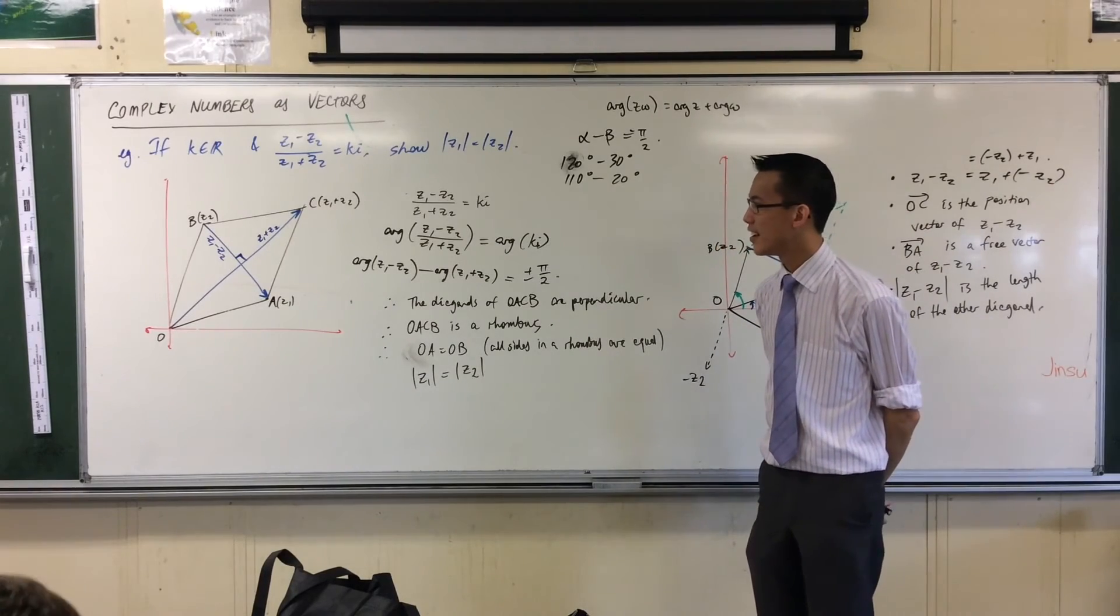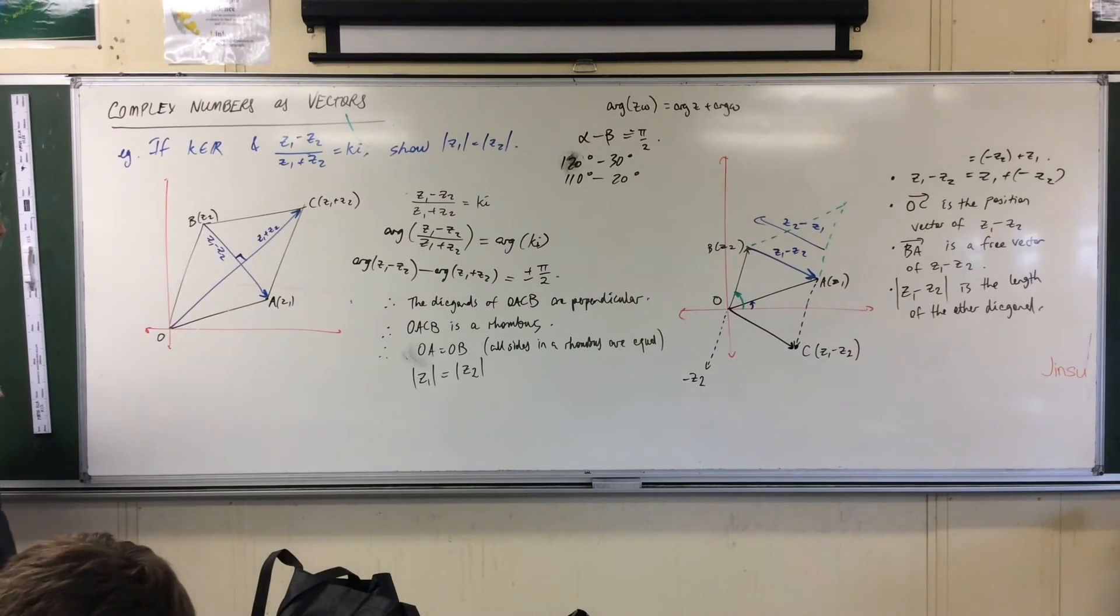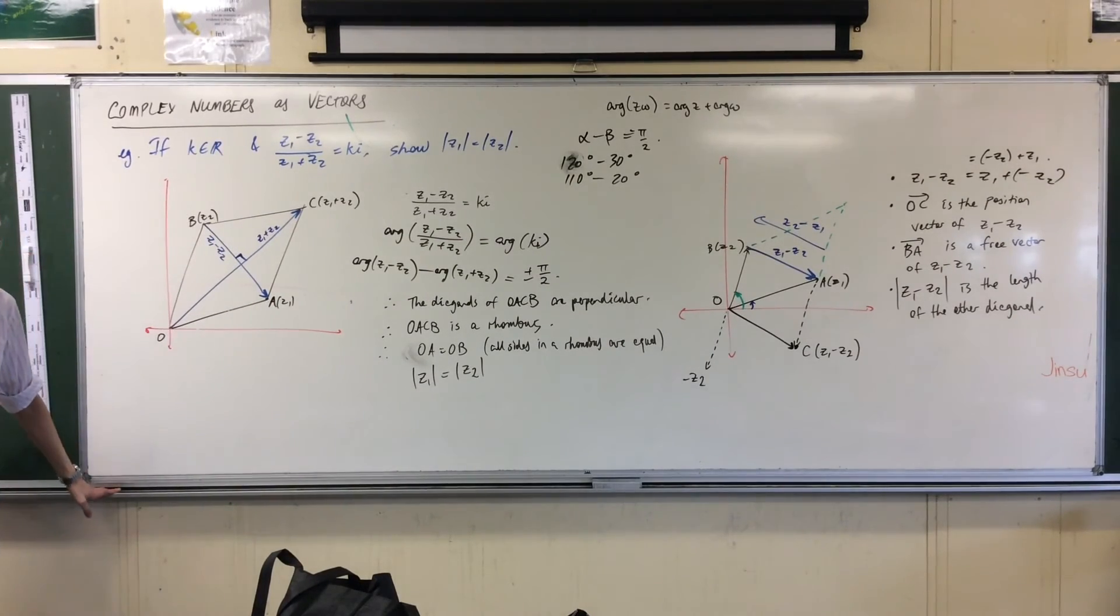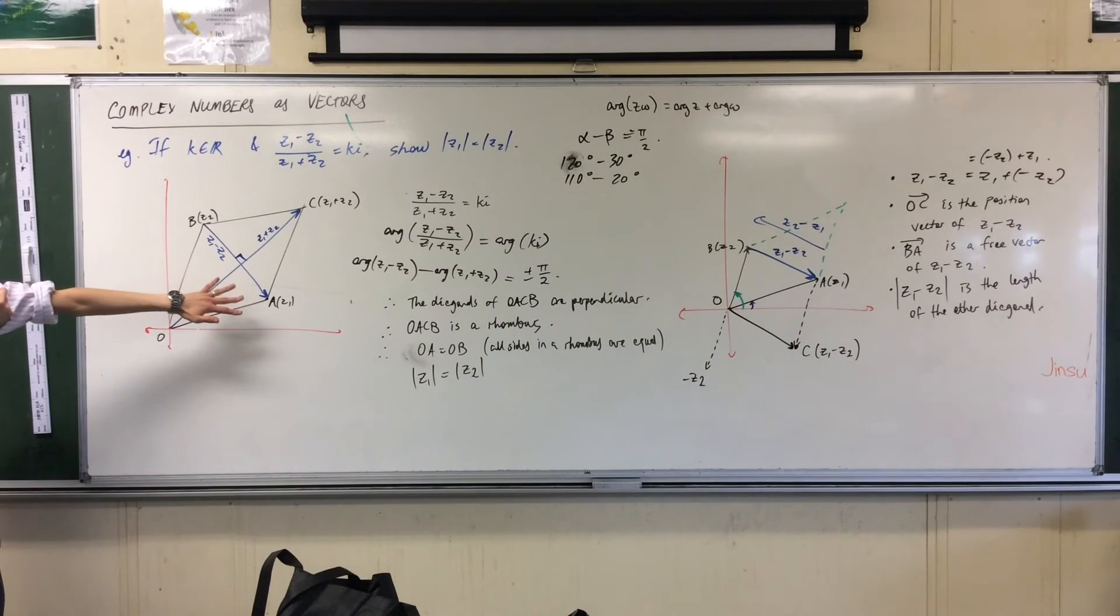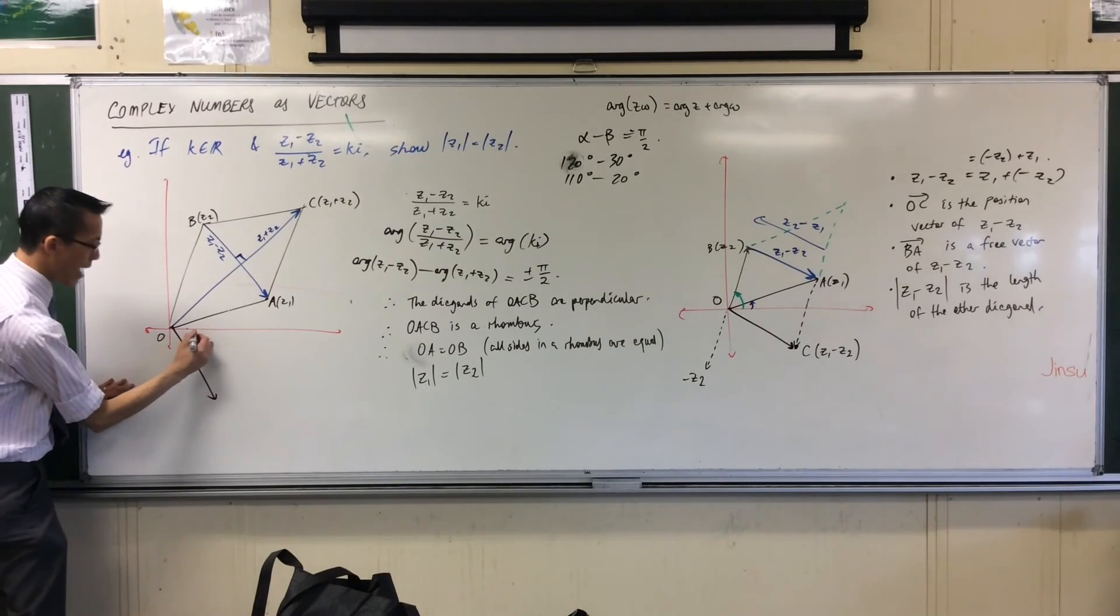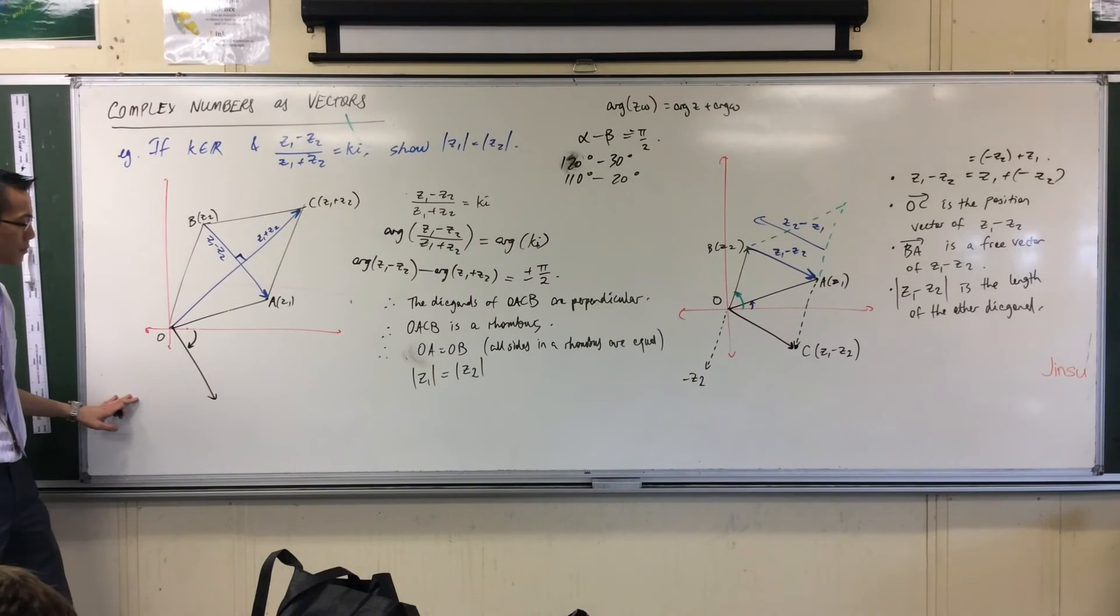Question? Physically what would be the argument of Z1 minus Z2? That's a great question. The brilliant thing about this is that if that's Z1 minus Z2, this is the free vector, so where is the position vector of Z1 minus Z2? And the answer is it's down here. So then you use the angle, the argument I'm talking about is right there.